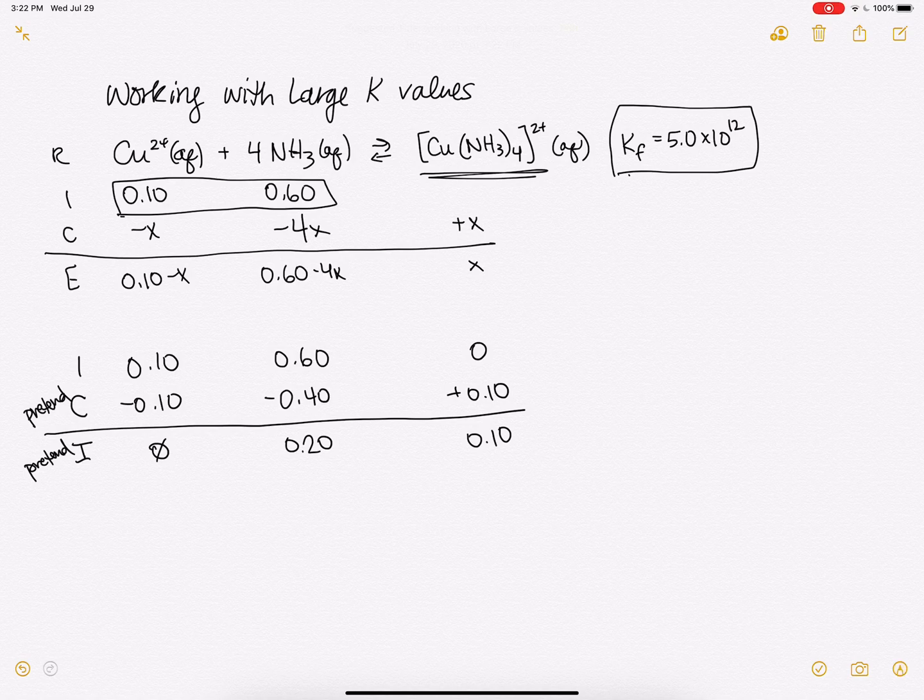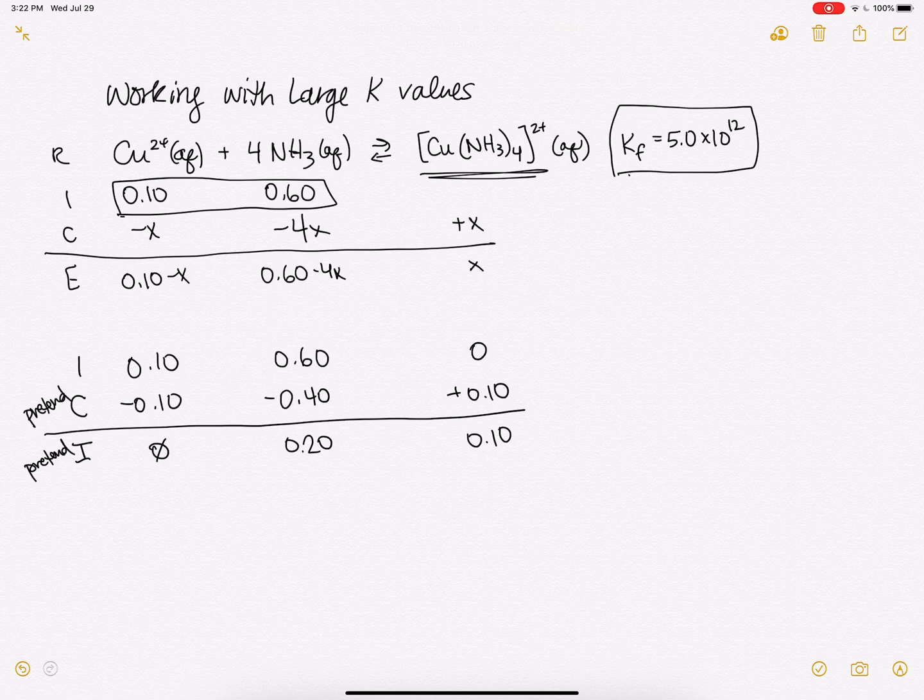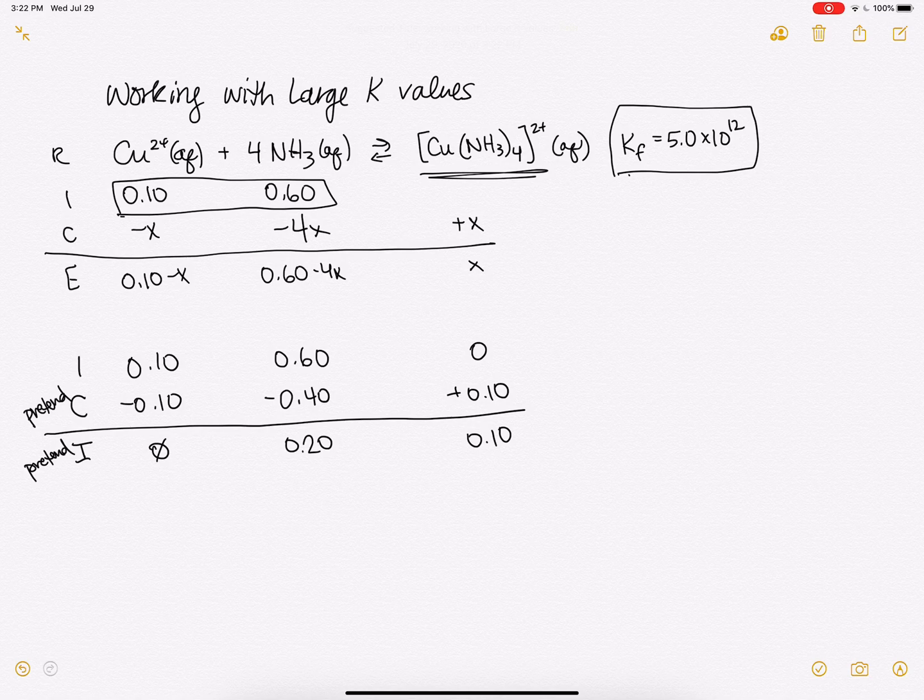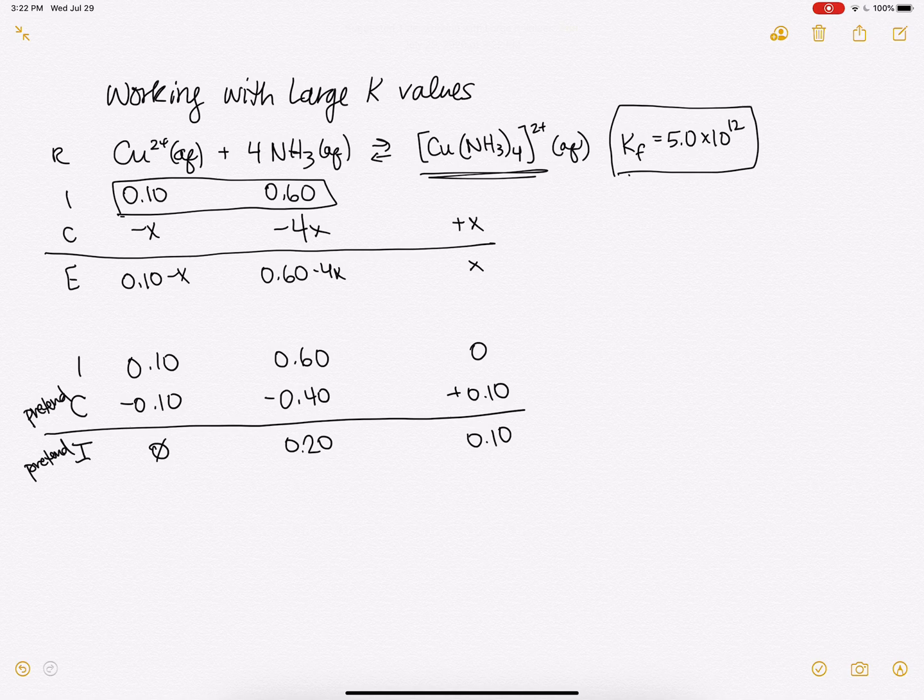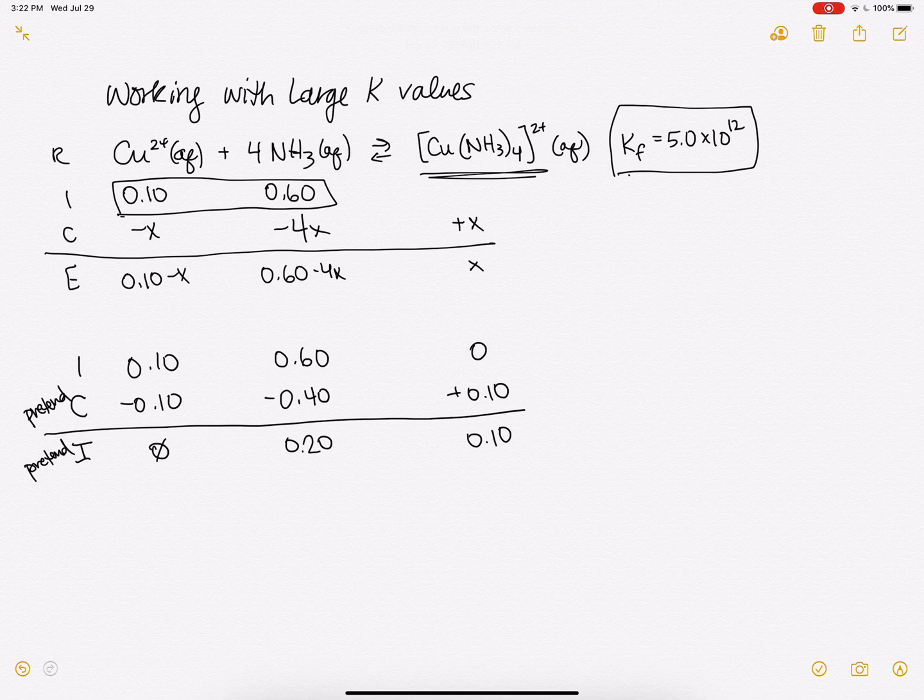Why did we do this? Well, what we've done is we've made Q infinity. We're dividing by 0 in our expression for Q, so Q would be infinity. And that means Q is greater than K, and it means that the reaction will proceed spontaneously in the reverse direction. So we're going to back-react this.